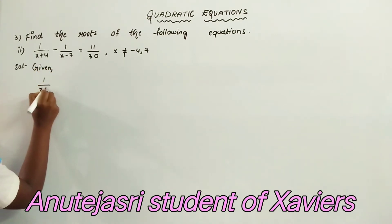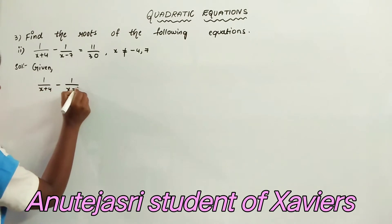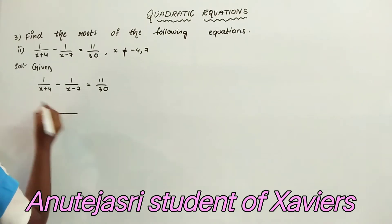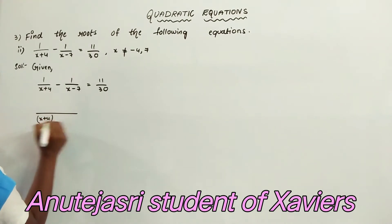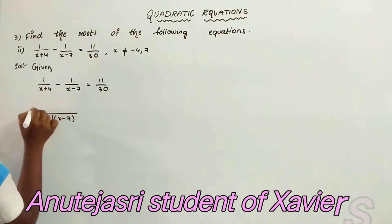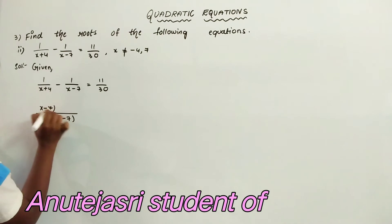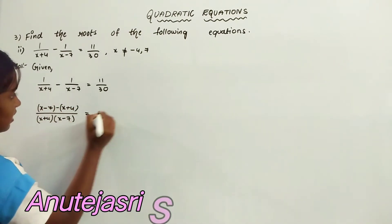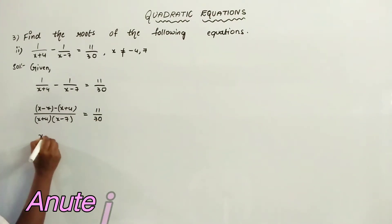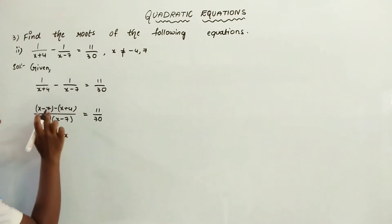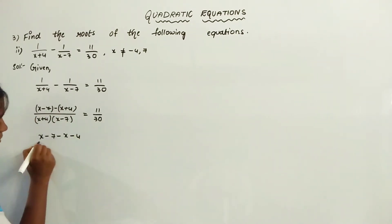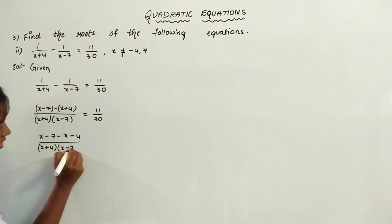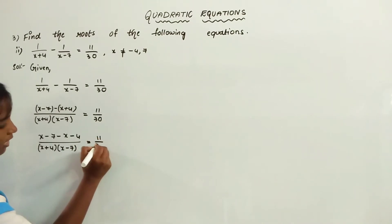Given 1 by x plus 4 minus 1 by x minus 7 is equal to 11 by 30. We are taking the LCM of x plus 4 and x minus 7. So then x minus 7 minus x plus 4 over x plus 4 into x minus 7 is equal to 11 by 30.